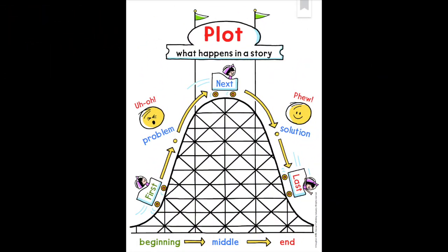Remember, the plot of a story often includes a problem and a solution. The problem is something that goes wrong or causes trouble. In our graphic, this is represented by the emoji making the uh-oh face. The solution of the story is how it is fixed or solved. In this graphic, that's represented by the smiling emoji.